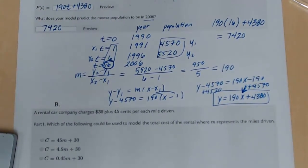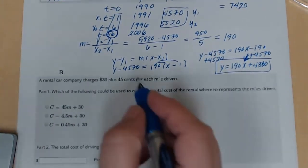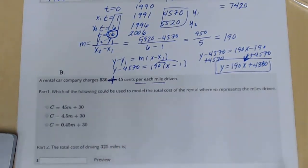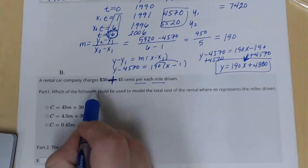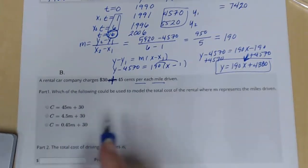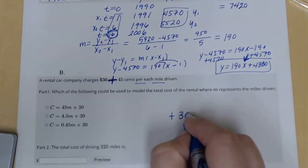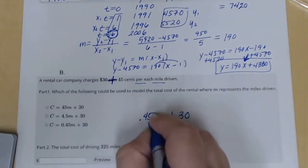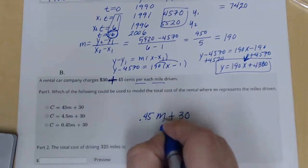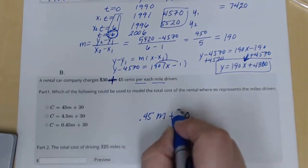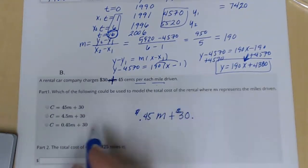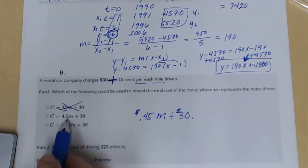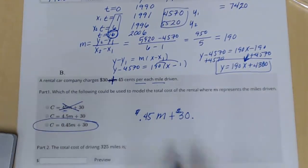Next one, a rental car company charges $30 plus 45 cents per mile. Which of the following could be used to model? Now, whenever you're given multiple choices like this, figure out what you have and then go match it up. So I'm going to pay $30 once. 45 cents per mile means I'm going to pay 0.45 times the mile. This is in a dollar amount. So we make sure our cents are in a dollar amount. I don't want to use 45 cents. This looks like $4.50. So this would be the correct answer.